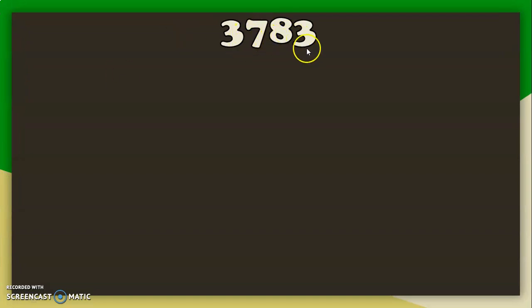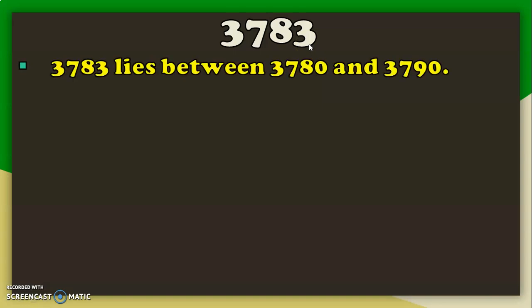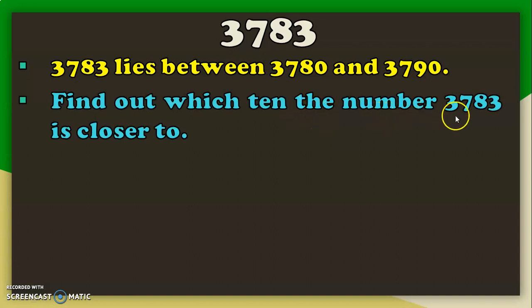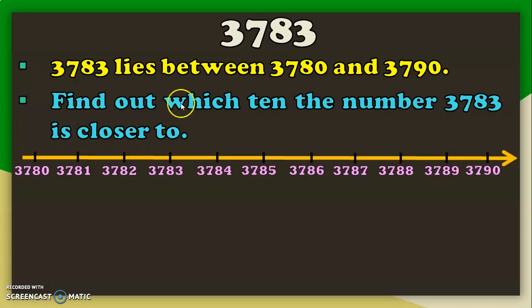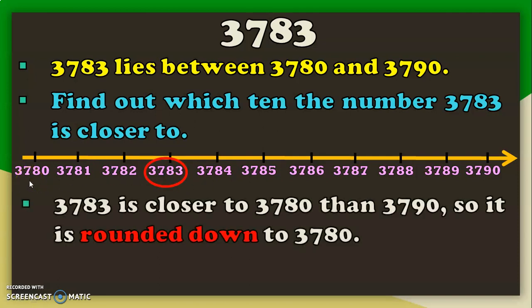Let us take another example with the 4-digit number 3783. We will round it to the nearest 10. The tens digit is 8, so 3783 lies between 3780 and 3790. Using a number line from 3780 to 3790, we can see that 3783 lies closer to 3780 compared to 3790. So, it is rounded down to 3780.